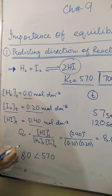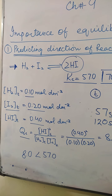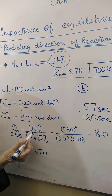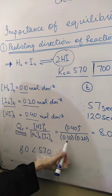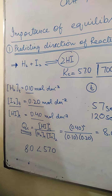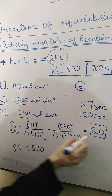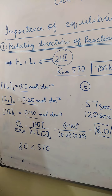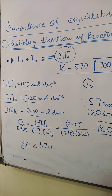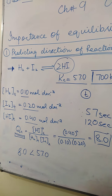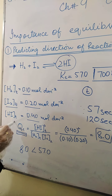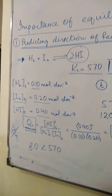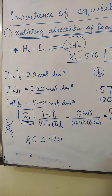When we take values at time T — when the reaction is still going on, not yet complete — we use the reaction quotient, Qc, not Kc. We use Qc because Kc is only used when you have the final equilibrium concentrations after the reaction is complete. So we put the values into Qc: hydrogen iodide concentration 0.4, hydrogen concentration 0.1, and iodine concentration 0.2 moles per decimetre cube. When we do this calculation, the answer is 8.